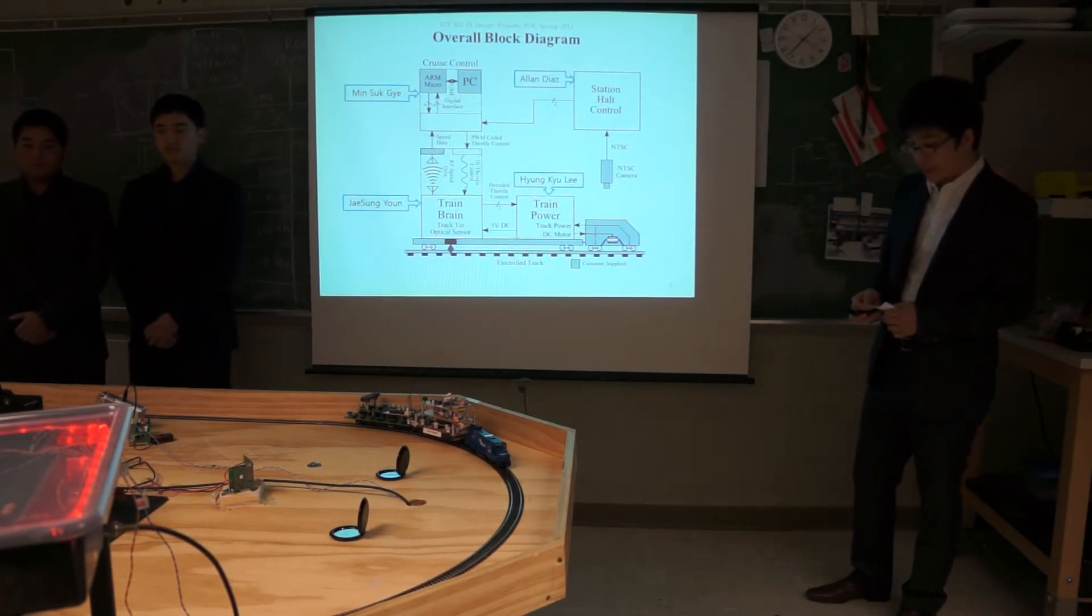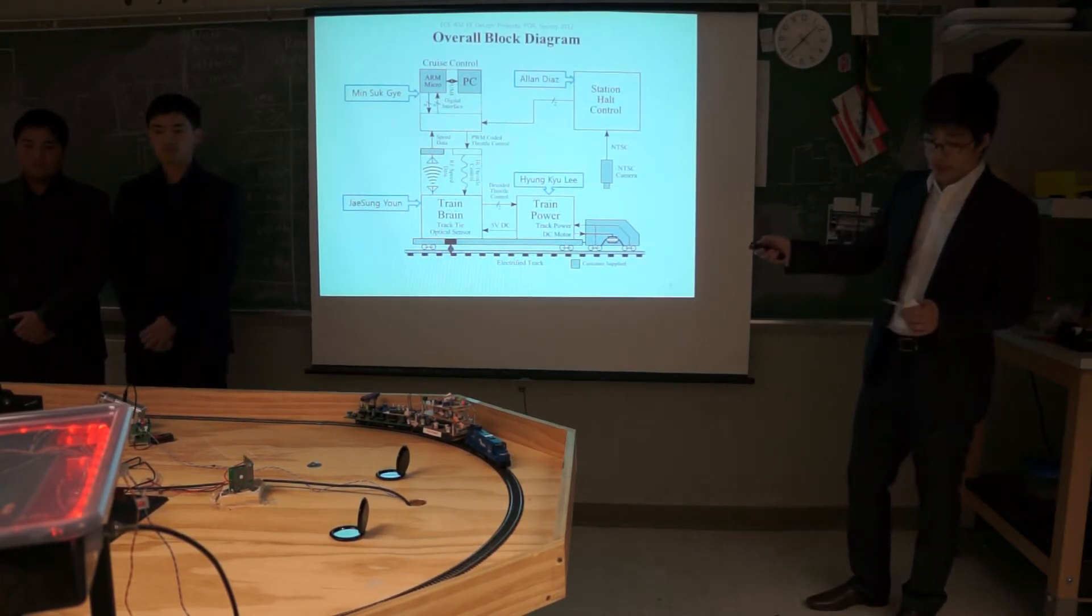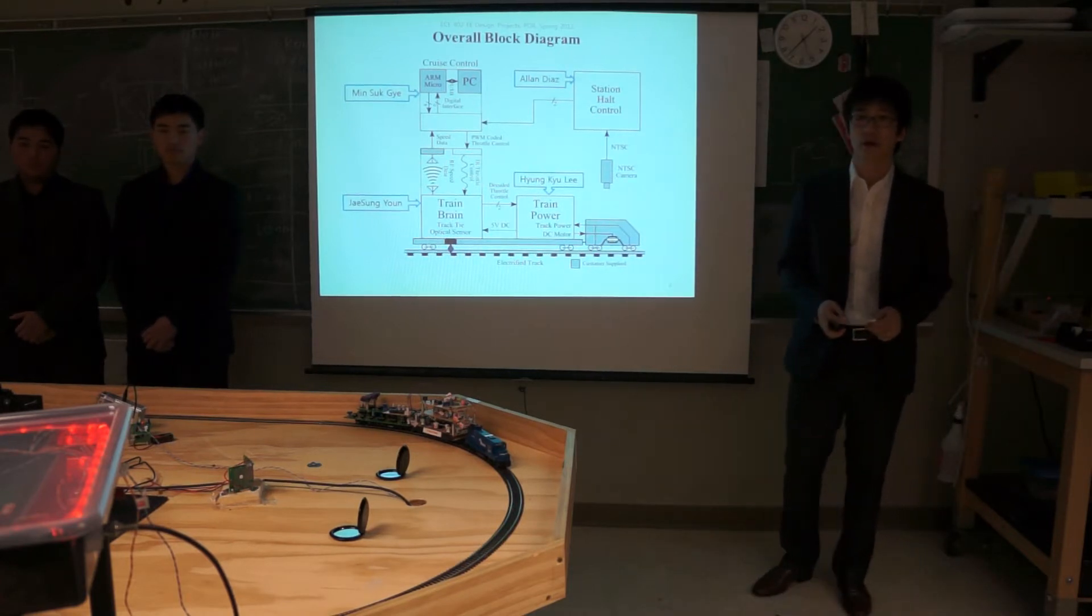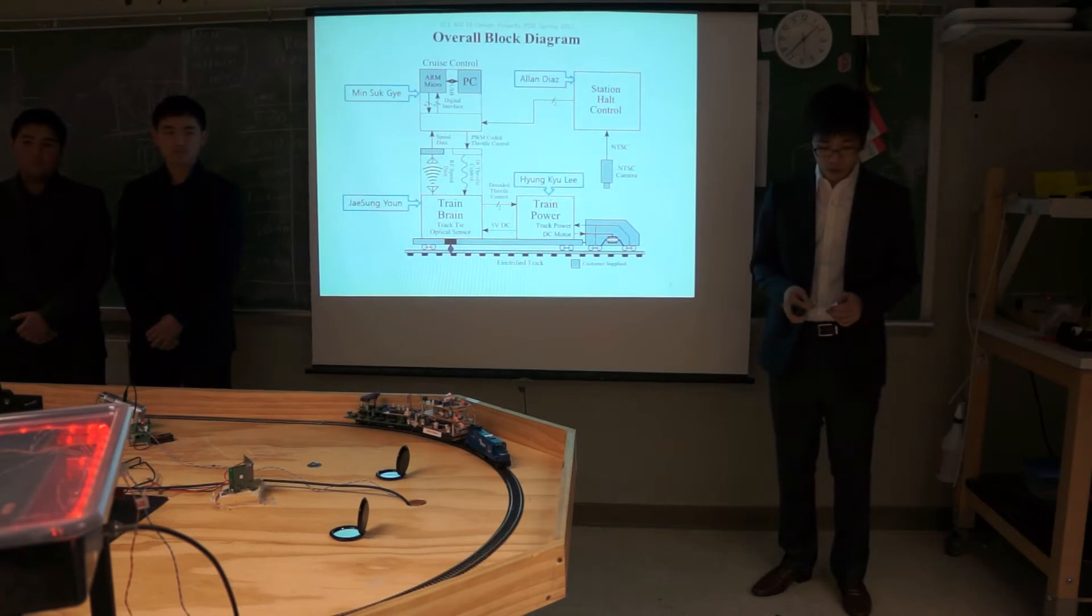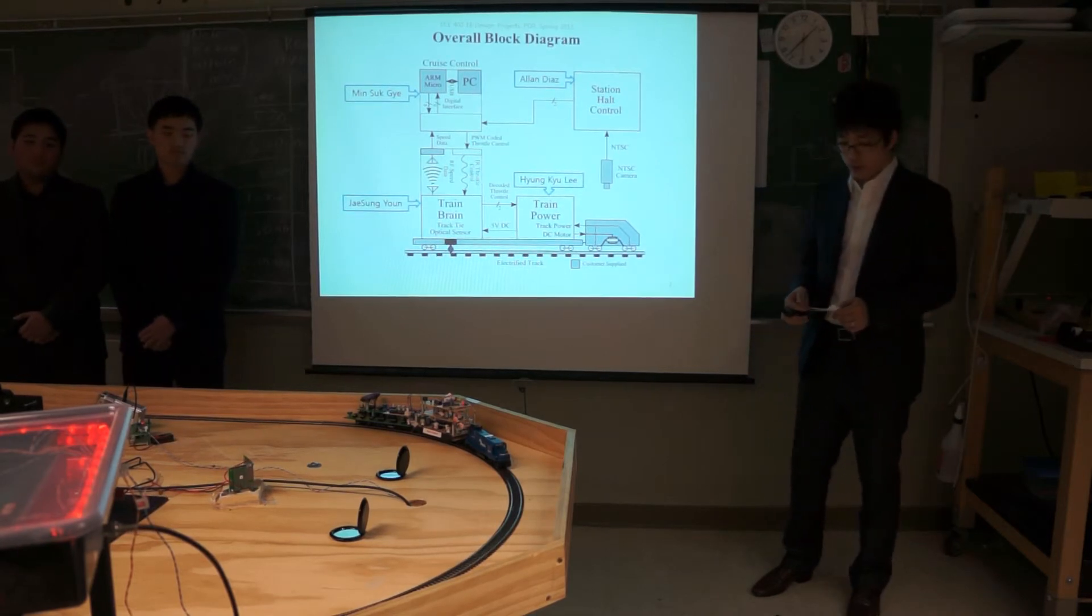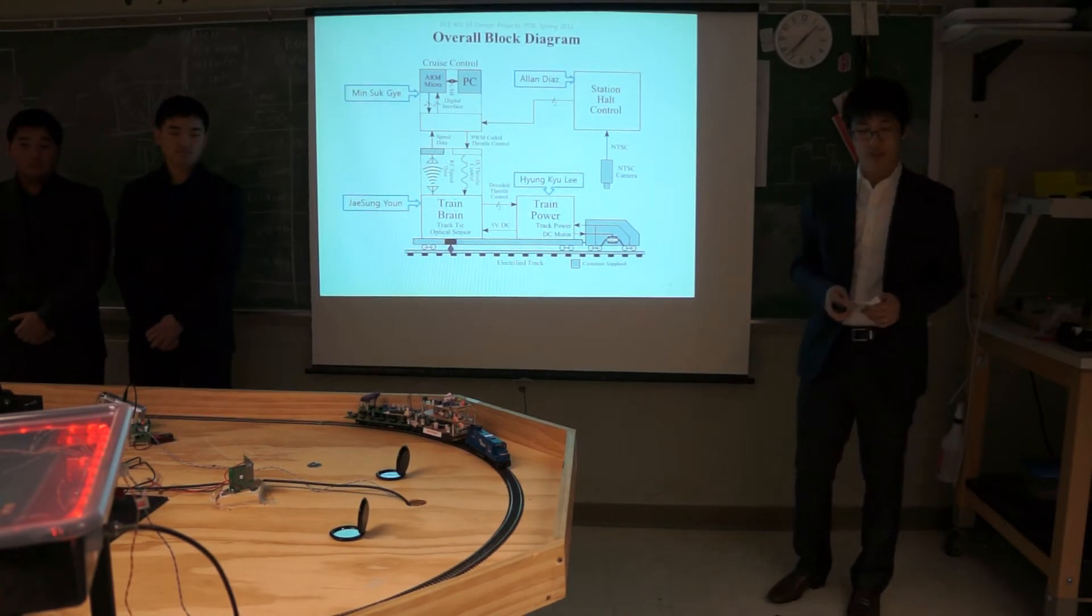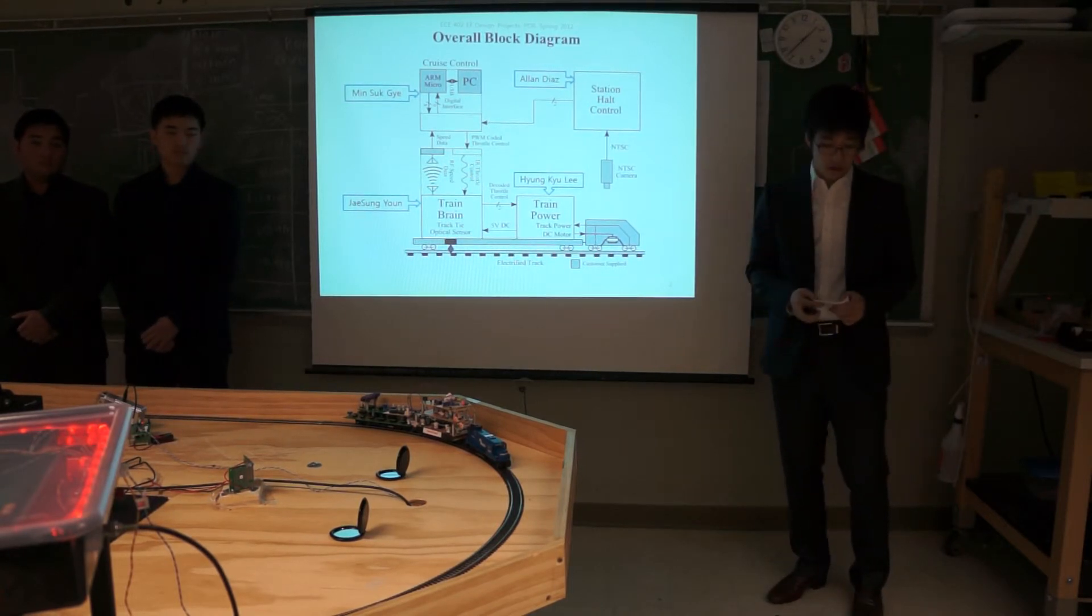First, the user may put a desired speed on the mat-like bogey on the cruise control side. The train will maintain the speed no matter if there is a curve or a load on the train. Also, the auto halt control button may be pressed located in the station halt control side. The train will be brought to a precise stop the next time it passes the station.